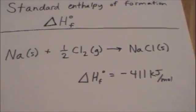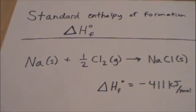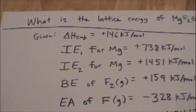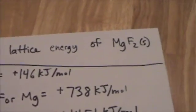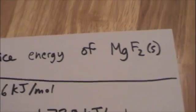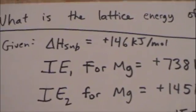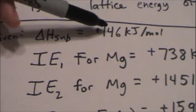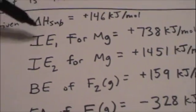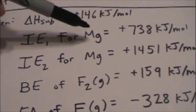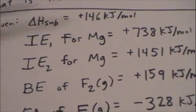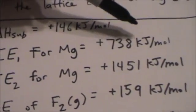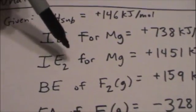Now, what does this have to do with the Born-Haber cycle? I'll show you. Here's a typical problem from a general chemistry textbook asking: what's the lattice energy of magnesium fluoride solid, given the following information? The enthalpy of sublimation is positive 146 kJ per mole. The first ionization energy for magnesium — the energy required to pull off that first electron — is positive 738 kJ per mole.